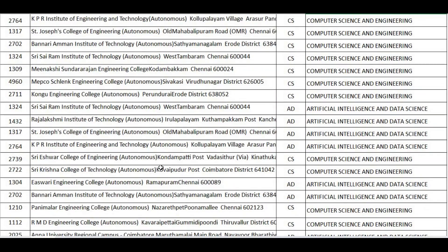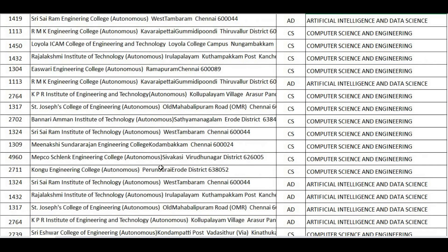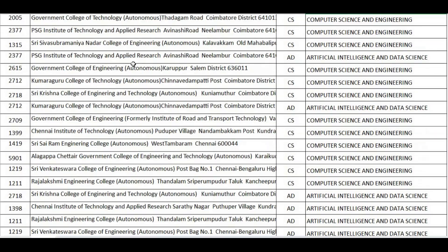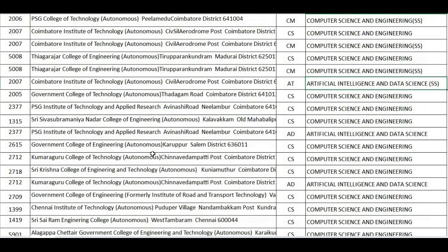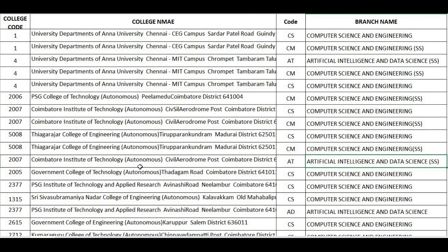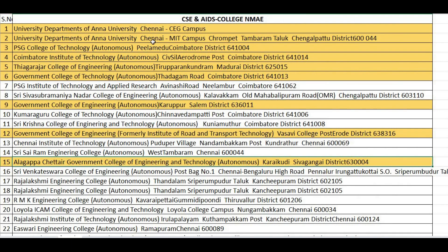This is a sample choice for AIDS as well as CSE. Last year, OC cutoff in the first round — many colleges had CSE as well as AIDS going down to 0. Based on choice filling, the college you get depends on your cutoff. Top-ranked colleges include CGC campus, MIT campus, PSG, GCT, PSG Institute, SSN, Government College of Engineering Salem, Kumaraguru, Sri Krishna College of Engineering and Technology.